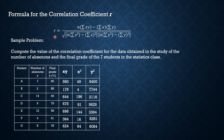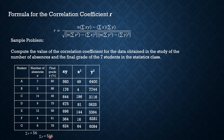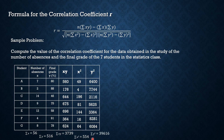Now, to compute r, let's first find the summation of xy, summation of x squared, summation of x, summation of y, and summation of y squared. Adding all values in the x column gives summation of x = 56. Adding all values in the y column gives summation of y = 516. Adding all values in the xy column gives summation of xy = 3,739. The summation of x squared is 554, and the summation of y squared is 39,616.